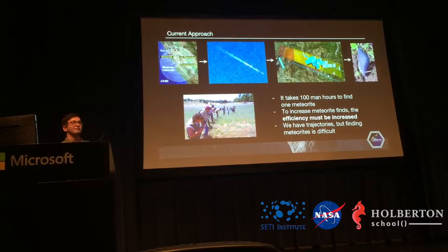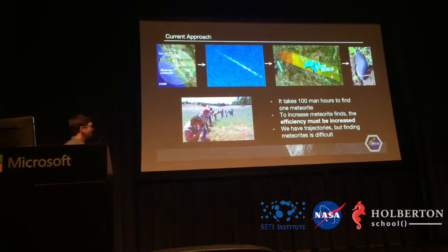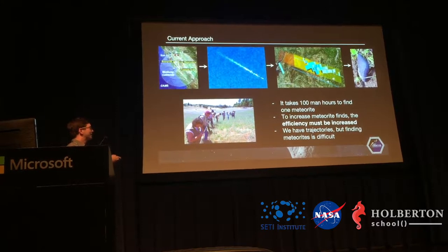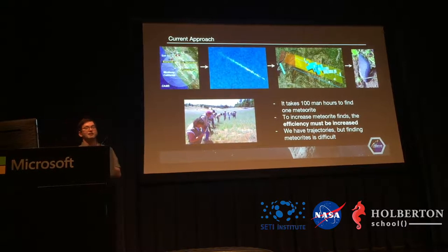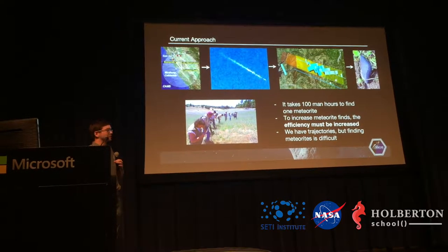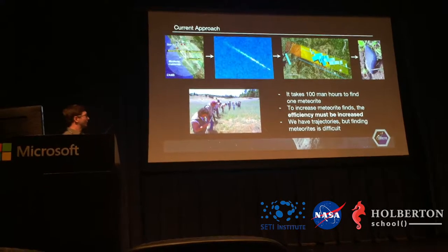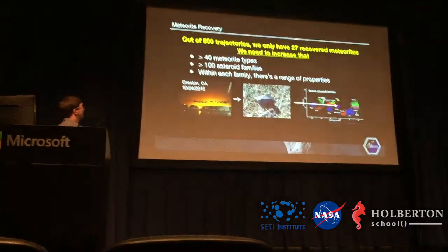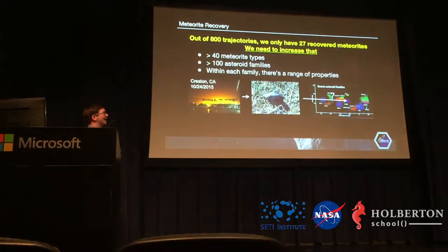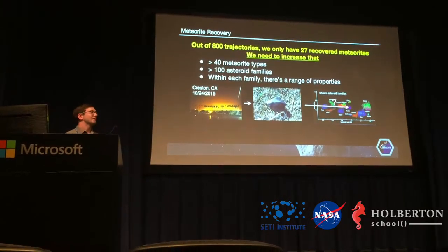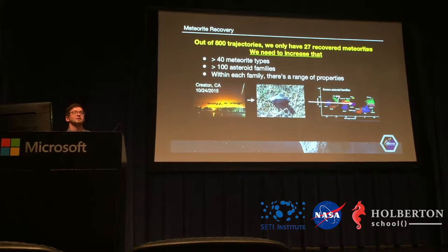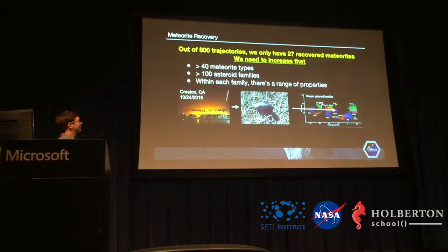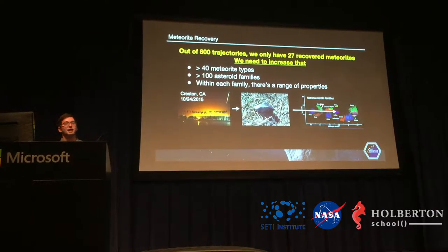But it can take 100 man-hours to find just one meteorite. To increase meteorite finds and link them to their trajectories, we need to increase the efficiency at which we find them — it's very difficult just walking around the strewn field. Out of 800 trajectories we have, we've only recovered 27 meteorites, which illustrates how difficult it is. There are 40 different meteorite types and over 100 asteroid families.